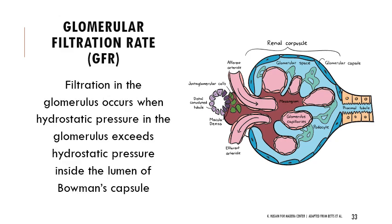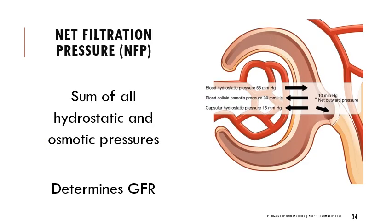Filtration in the glomerulus occurs when hydrostatic pressure in the glomerulus exceeds hydrostatic pressure inside the lumen of Bowman's capsule. Material moves from high pressure to low pressure. The net filtration pressure is the sum of all hydrostatic and osmotic pressures — GBHP, BCOP, and CHP. Net filtration pressure equals forward pressure (GBHP) minus inward pressure (BCOP + CHP). GBHP must be at least 45 mmHg to exceed the inward pressure; on average it's around 55 mmHg.